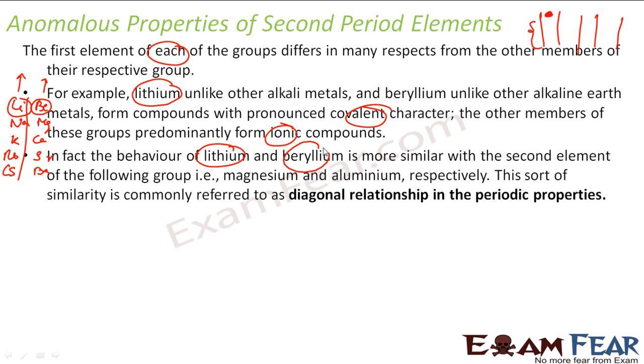And if you see lithium and beryllium, their property is more similar with the second element of the following group. For example, lithium has properties similar to magnesium. And if you draw my 13th group - boron, aluminium, gallium, indium, thallium - the beryllium has properties similar to aluminium. That is what they have seen. This is all diagonal.